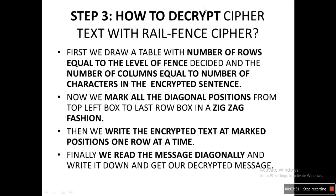Step 3: How to decrypt the ciphertext with Rail Fence Cipher. First, draw a table with number of rows equal to the level of fence decided — known to both receiver and sender — and number of columns equal to the number of characters in the encrypted sentence. The number of characters in the encrypted sentence and the plaintext are equal because we are not replacing any text, just jumbling up the order. Then mark all the diagonal positions from the top left box to the last box in a zigzag fashion, write down the encrypted text at the marked positions one row at a time, and finally read the message diagonally to get the decrypted message.